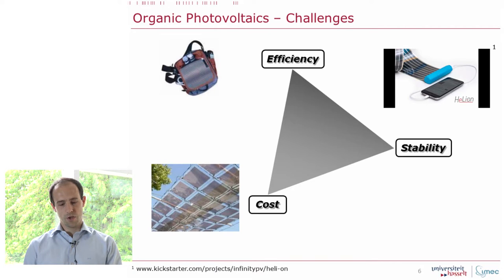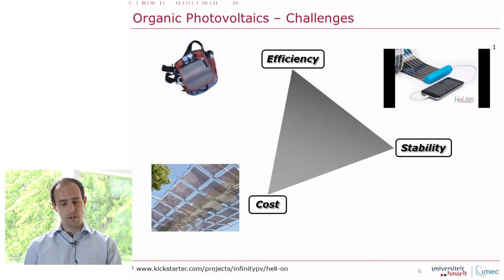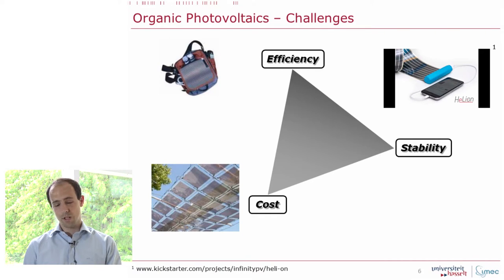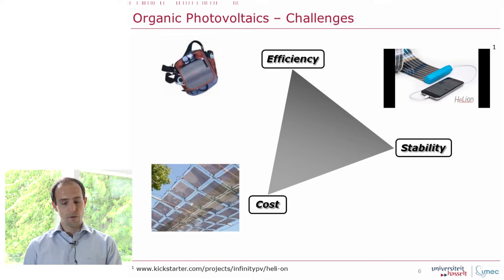Here is shown what is called in the field the Brabeck triangle of OPV. What is stated in this triangle is that there are three main factors of importance for OPV — and actually also for other PV technologies — to become economically viable: efficiency of the devices, stability or lifetime of the devices, and the cost of the final devices.